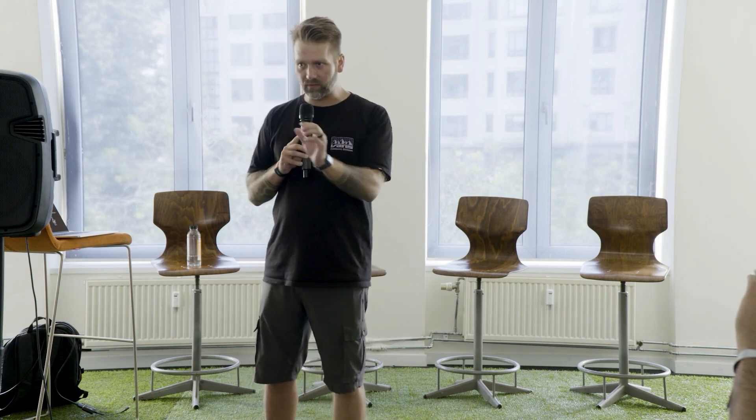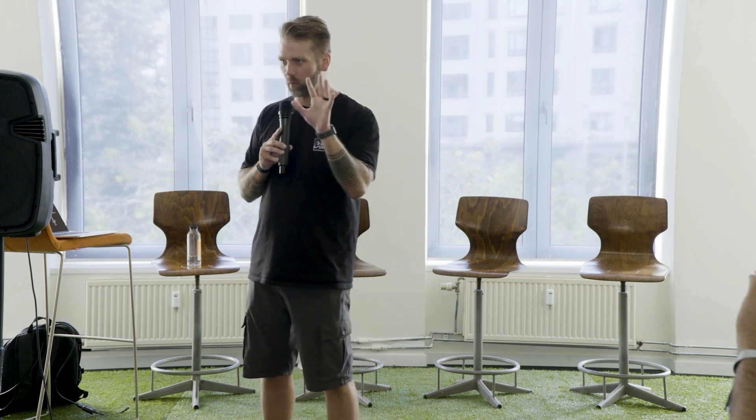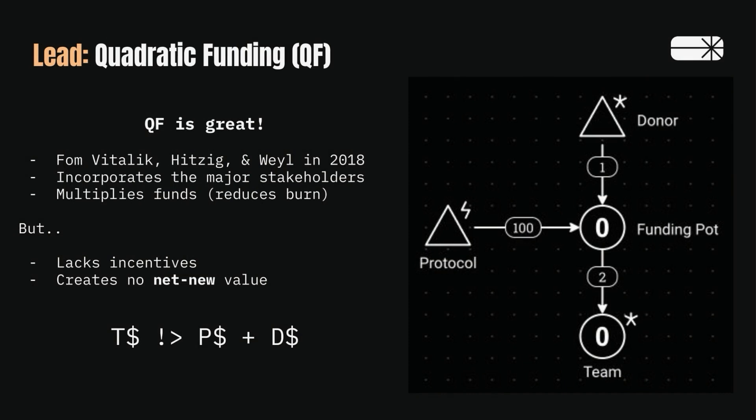Let's shift gears and talk about two promising mechanisms. There are so many smart people who have sensed that there was something very promising and unique here — like everyone had part of a dream of this flux capacitor, and finally we're seeing a clearer picture of what could be. Quadratic funding is amazing, extremely powerful. It came out in 2018 from three authors, incorporates the major stakeholders — that's a big deal. It's an improvement over direct prospective grants.